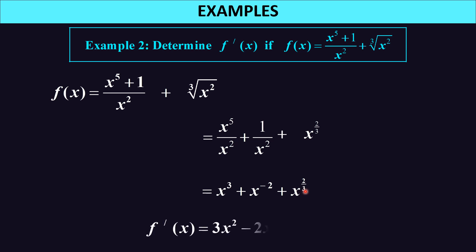dy/dx becomes 3x² from the x³ term, negative 2x to the negative 3 from the x to the negative 2 term, and two thirds times x to the negative one third from the x to the two thirds term.